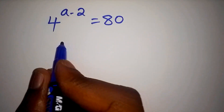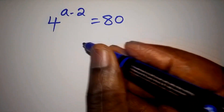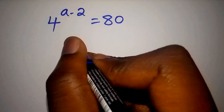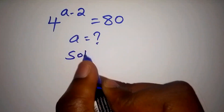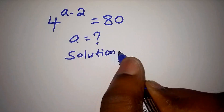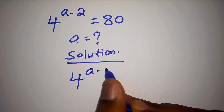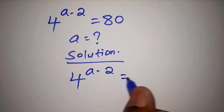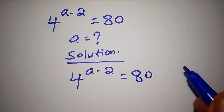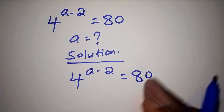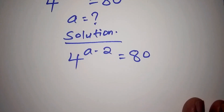Did you know that only one percent got this math problem right? Let's now check where the majority made the mistake. We are asked to find the value for a, given that 4 to the power of a minus 2 equals 80. You can pause the video, work it out, and then share the answers you got.